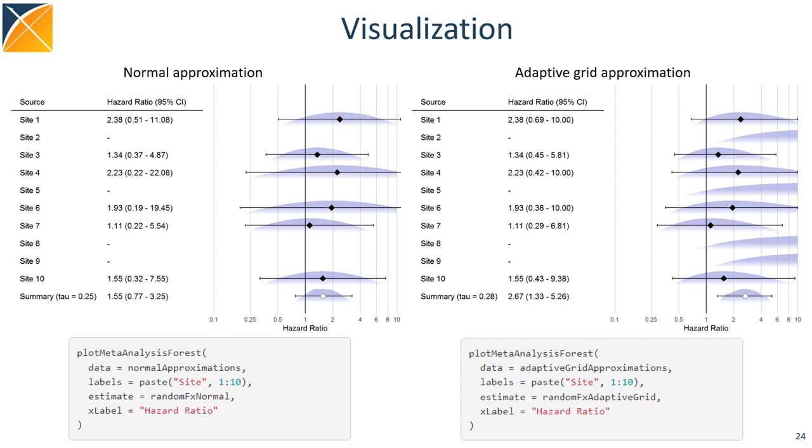On the right, we're using the adaptive grid approximations. Not only do we see that all sites missing on the left show greater likelihood for large effect sizes on the right, but we also see that the sites without zero counts show a skewed distribution with more probability mass for higher effect sizes.